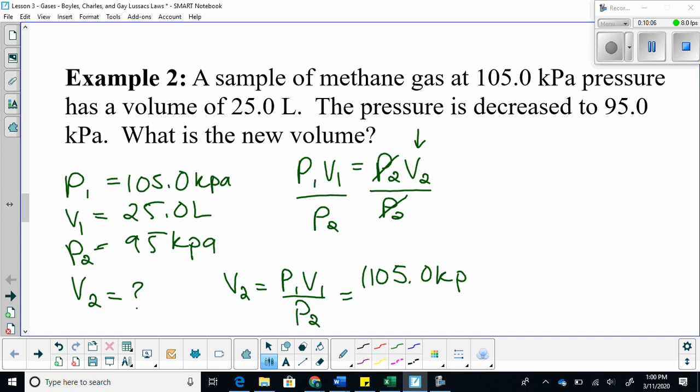Let's plug in some numbers. 105 kilopascals multiplied by 25 liters divided by 95 kilopascals. Now, looking at what happened to pressure, did it increase or decrease? It decreased. So what do we expect to happen to volume? Increase. Right. So let's cancel these units out. We are left with liters. That is what we want. When you plug this answer in, you will get 27.6 liters.